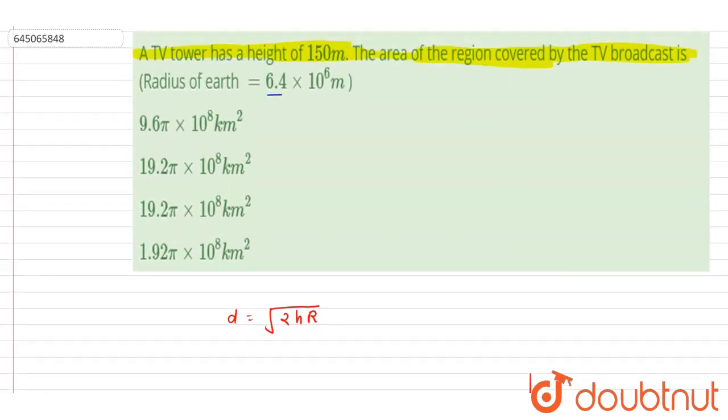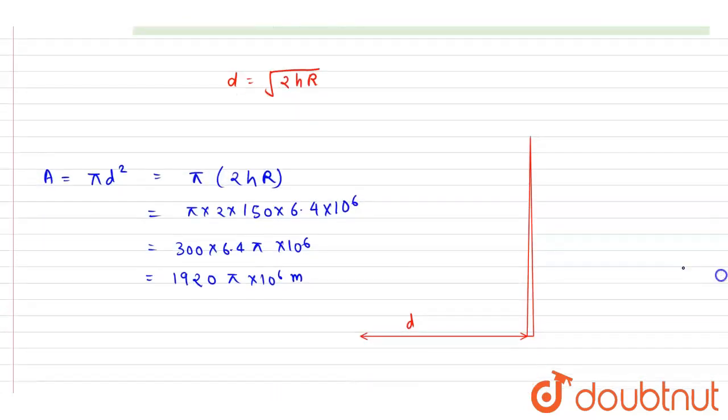Now if you see the options here, the option is in kilometer square and we took the unit meter square, right? This is also in meter, this is also in meter. So to convert it into kilometer we will multiply it with 10⁻⁶. Since we know that in one kilometer there are thousand meters, so to convert the meter square into kilometer square we will multiply it with this.